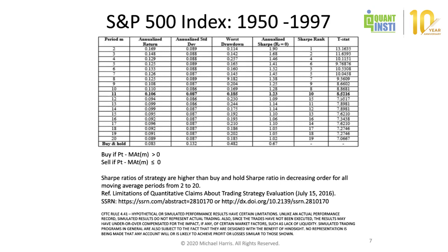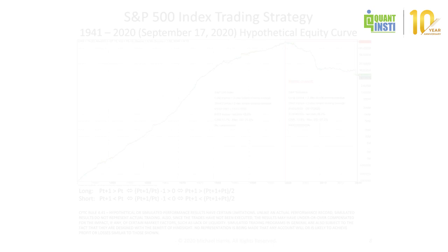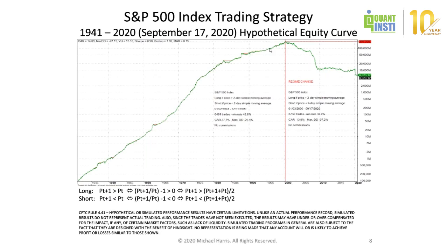This is what happened after 2000. Someone in the 90s back-tested a simple strategy that had worked for 50 or 55 years and thought they would be rich in the next 20 years. Instead, they got very poor. This strategy, after 2000, lost nearly 100%. This happened to the long-short strategy and the same happened to all the moving average versions.